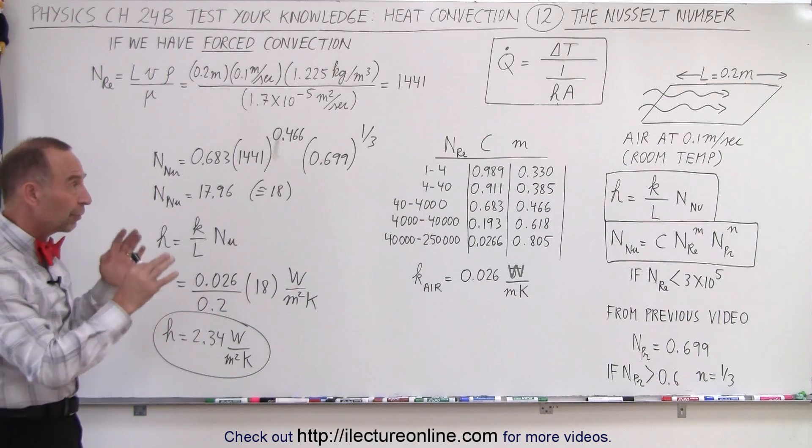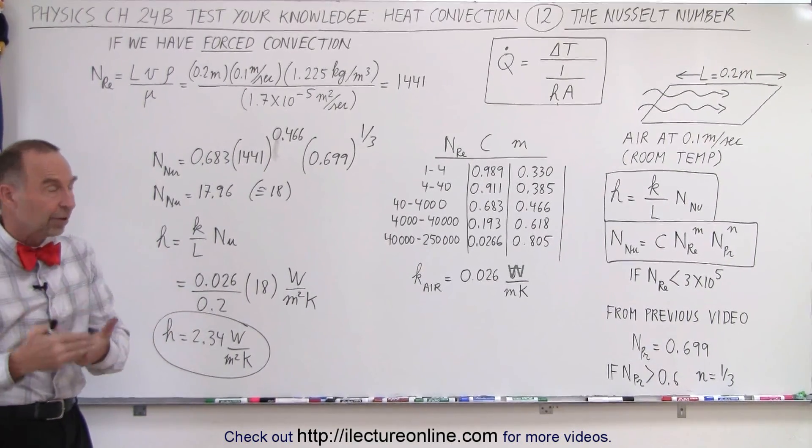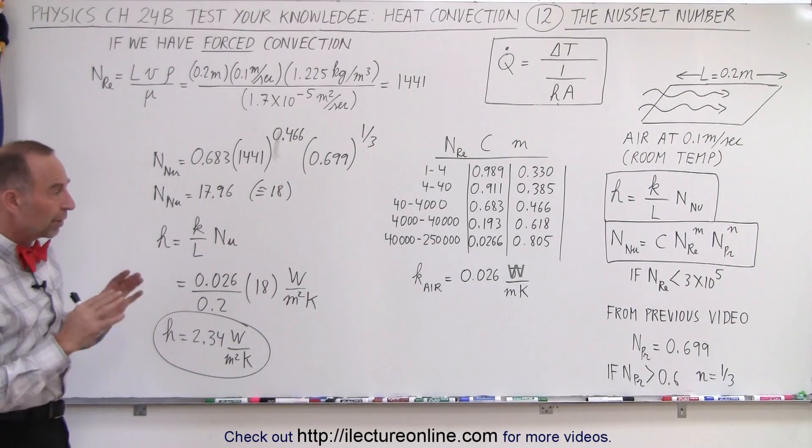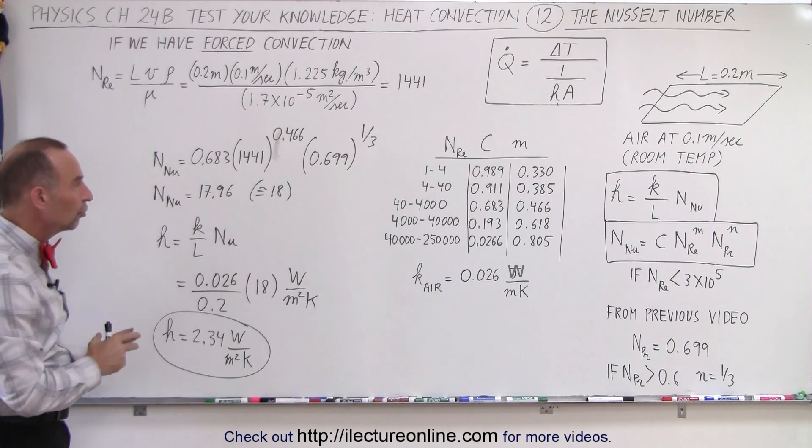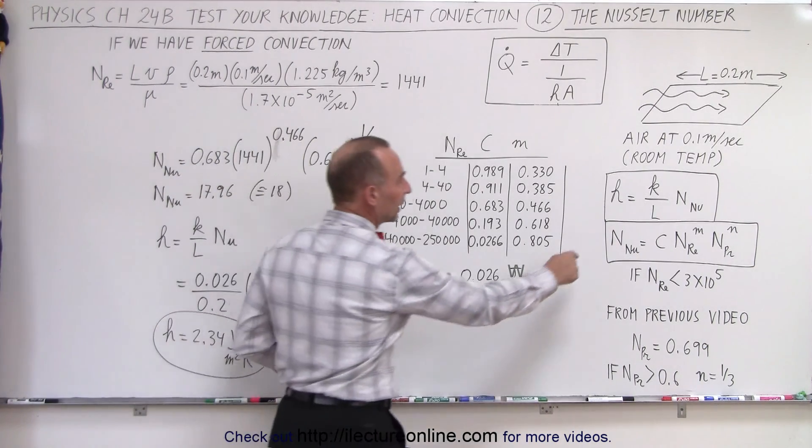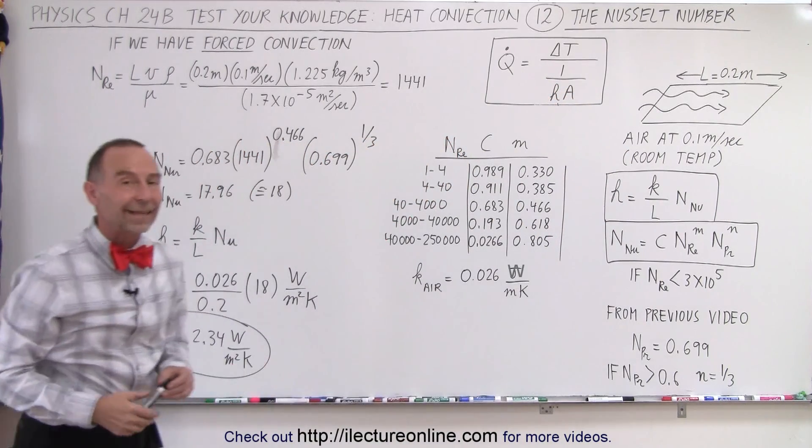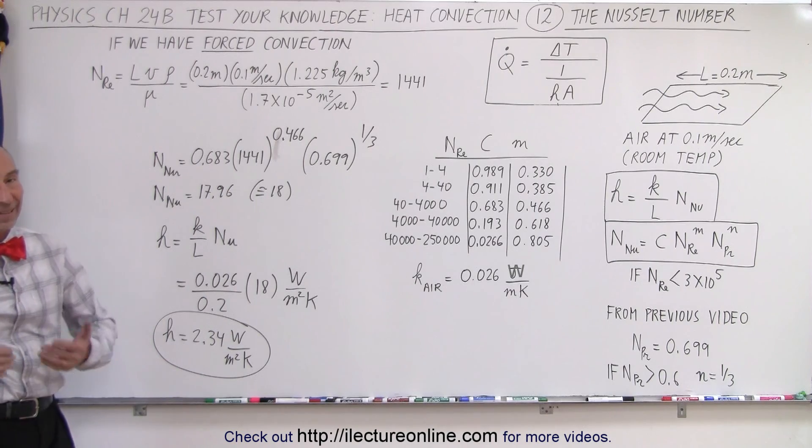So now at least you know that for a particular characteristic length, knowing all the parameters of the type of fluid, the temperature of the fluid, the velocity of the fluid, and so forth, you're able now to calculate the Nusselt number. From the Nusselt number, we're able to calculate the transfer coefficients, which then can be used to calculate the heat flow away due to forced convection. And that is how it's done.